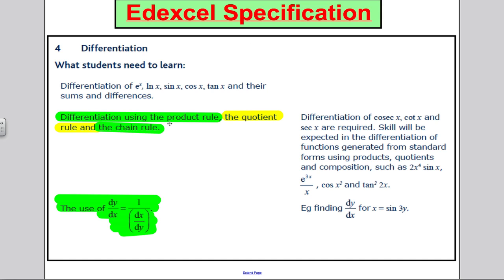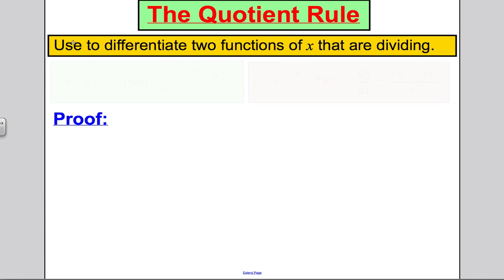Okay, let's start by introducing the Quotient Rule and what it does for us, and I'll even show you the proof of the Quotient Rule because it's nice and straightforward and uses the Chain Rule. So, the Quotient Rule, you use it to differentiate two functions of x that are dividing.